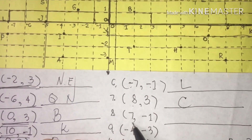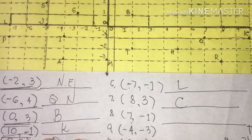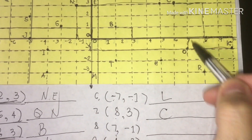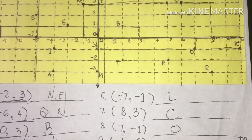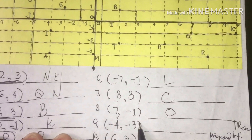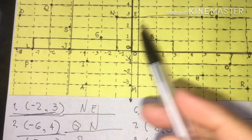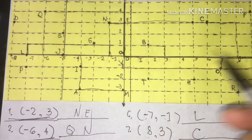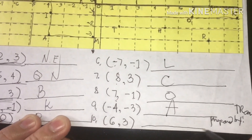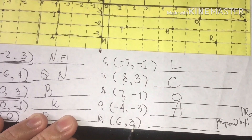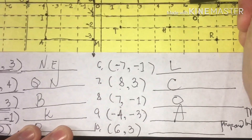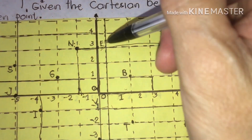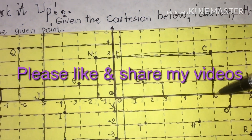Positive seven and negative one: so we have positive seven, then going down to negative one — that point is labeled O. Negative four and negative three: negative four, then down to negative three — that point is labeled A. Positive six and positive three: we go to six on the horizontal, one, two, three, four, five, six, then positive three on the vertical — that point is letter C.